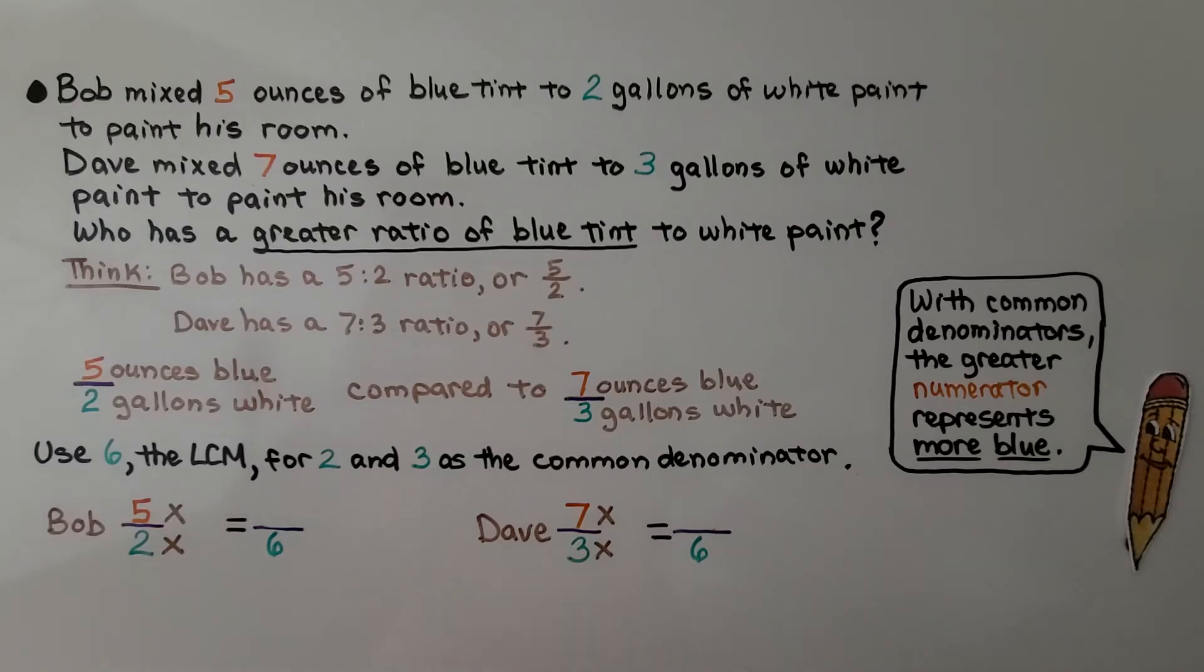And 2 times some number is 6, that would be a 3. 5 gets jealous, it gets multiplied by 3. That's going to give us a 15 for our first term, our numerator. And 3 times 2 is 6.